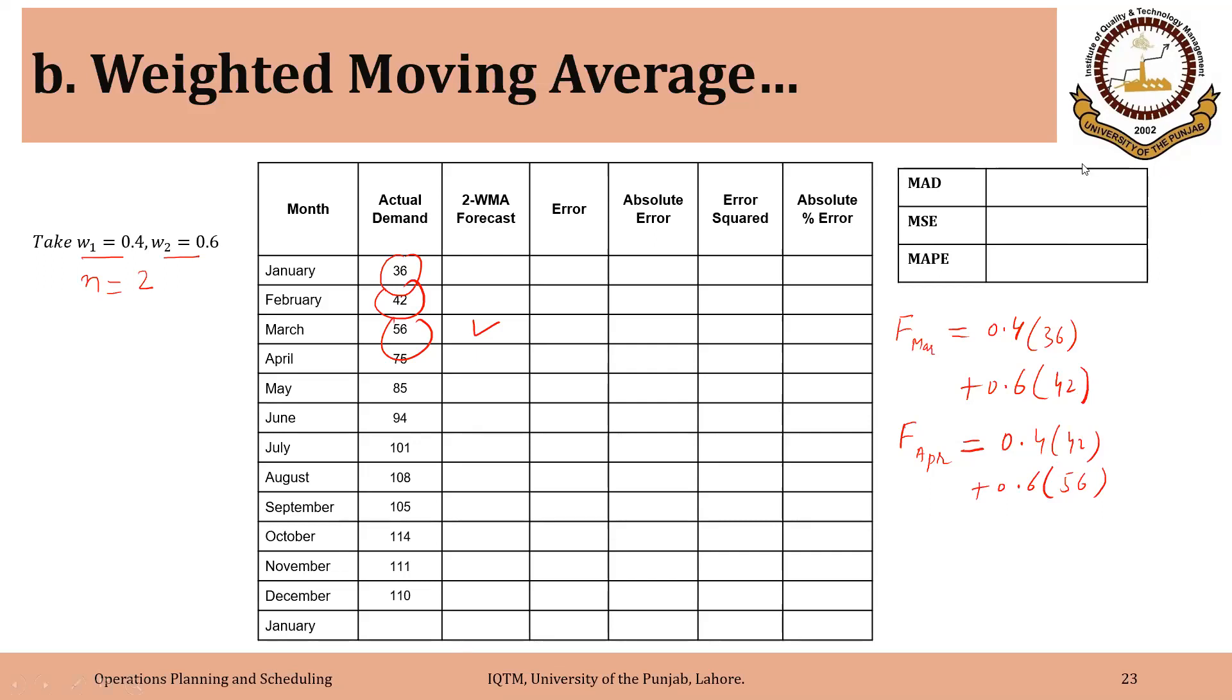Now we will solve this data set using weighted moving average with the help of Excel. And a question that you should have in your mind is from where do these weights come? So the answer is that we can assign these weights arbitrarily as I did in this case, and we can find optimum weights using some software package and we will do it using Excel.